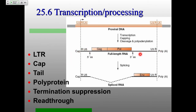Making the polyprotein — mostly you have the GAG proteins: matrix, capsid, nucleocapsid. In some cases it's extended through the polymerase genes — all those enzymes: protease, reverse transcriptase, and integrase. Or you have splicing at the main five prime and three prime splice sites giving you the envelope proteins. That's now an RNA which is missing the psi sequence, so it won't be packaged.